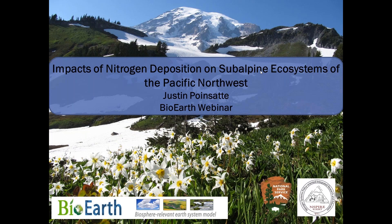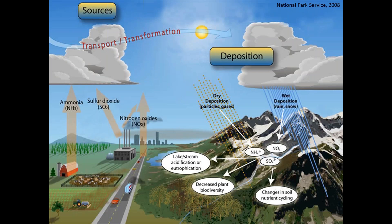Thanks, Liz, and thanks everyone for tuning in. I'll be discussing aspects of my dissertation research on the impacts of nitrogen deposition on subalpine vegetation systems of the Pacific Northwest, and also discussing other sensitive systems within our region. I conducted this research at Mount Rainier National Park. I'd like to acknowledge funding and support from the BioEarth Project, the National Park Service, and the NSPIRE IGERT at Washington State. As Sarah mentioned, nitrogen deposition begins with the emissions of ammonia, usually from volatilized fertilizer, and nitrogen oxides from combustion that arise into the atmosphere, are transported and transformed through meteorology and atmospheric chemistry, and then deposited on ecosystems that could be pretty remote from the actual emission source.